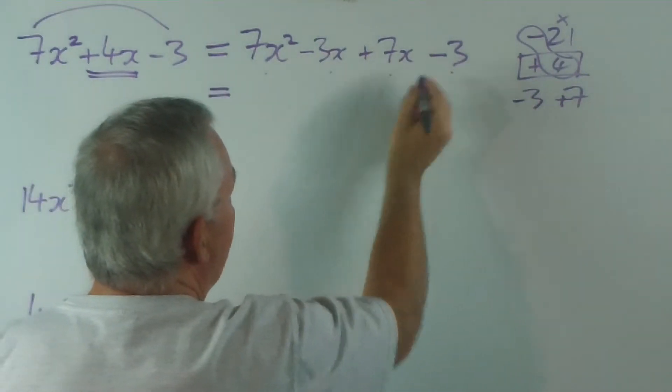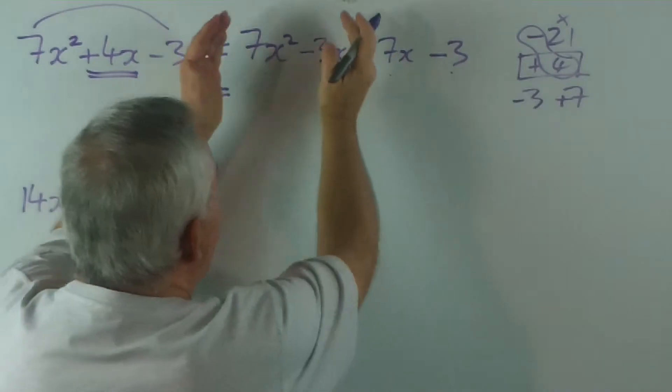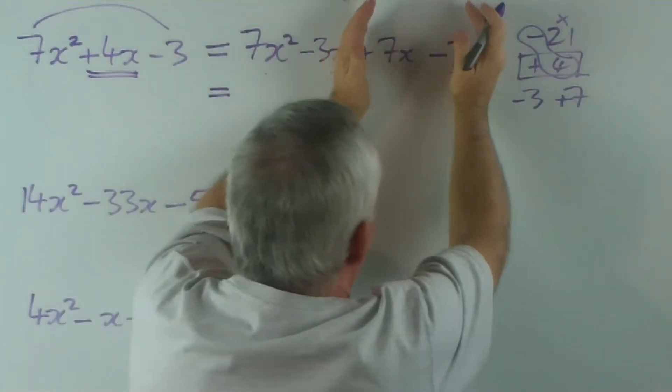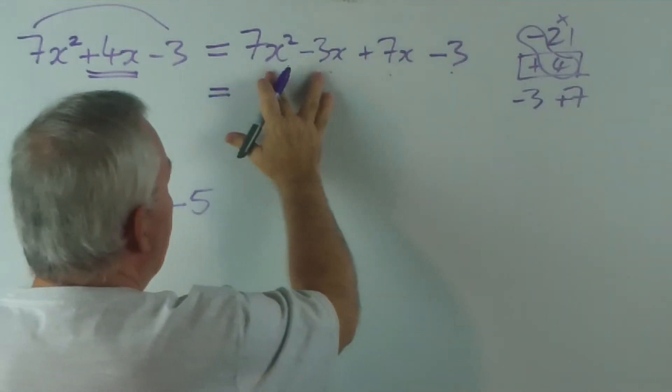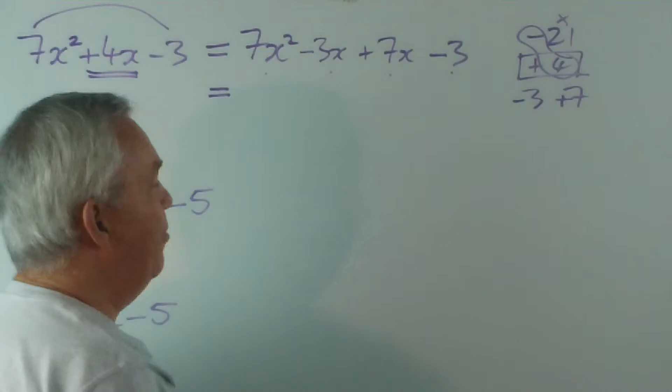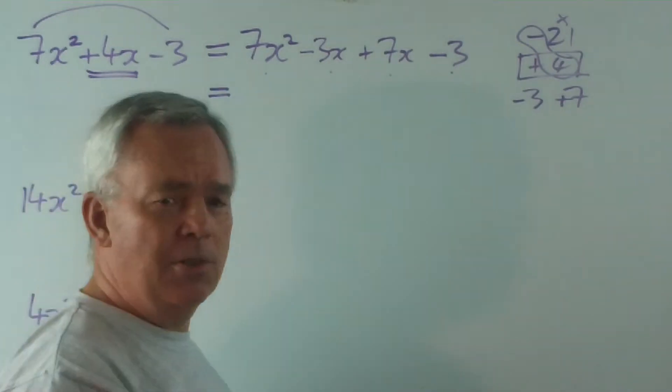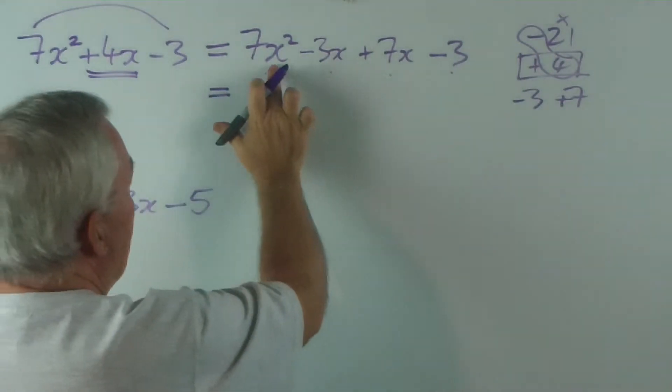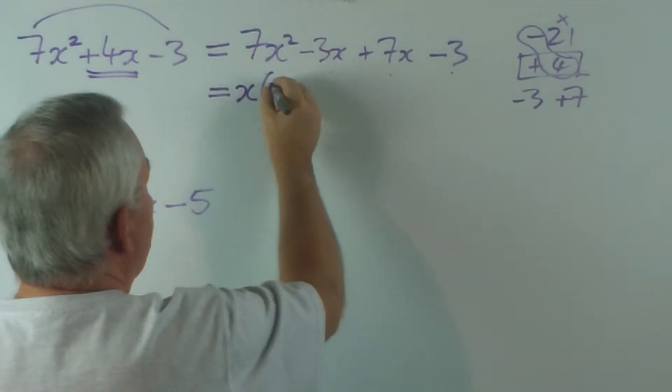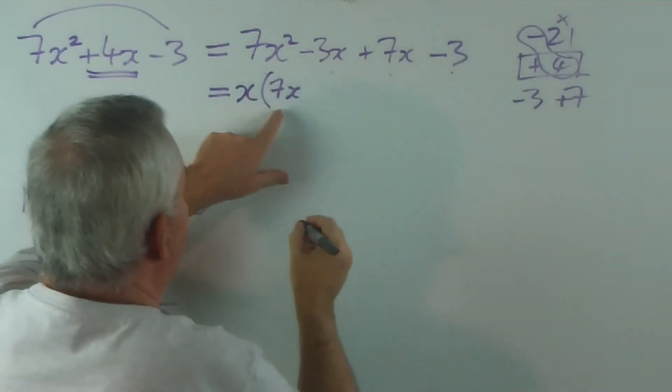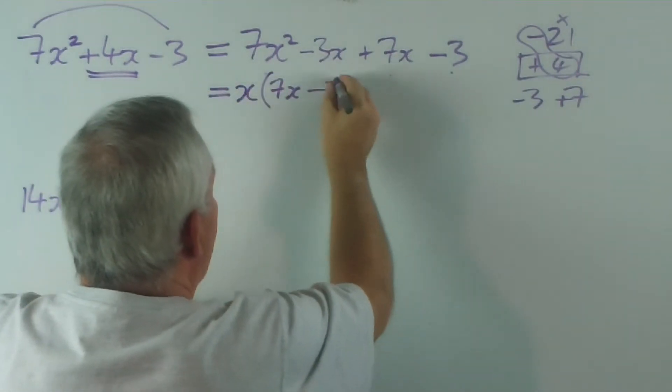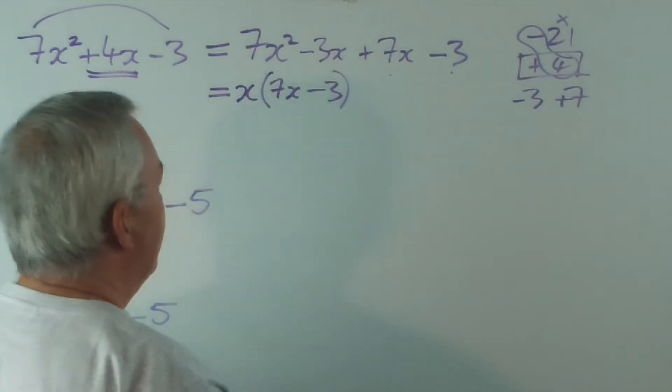Now, we have four terms now. And what we do is we factorise the first two, we look for a common factor, and we factorise the second two. Now, in the first two, the 7 and 3 are both prime, so there's no common factor, apart from one, which is a bit redundant, but you can see we can take x out. So, we'll take x out as a common factor. x times 7x is 7x squared, and x times negative 3, or minus 3, is minus 3x.